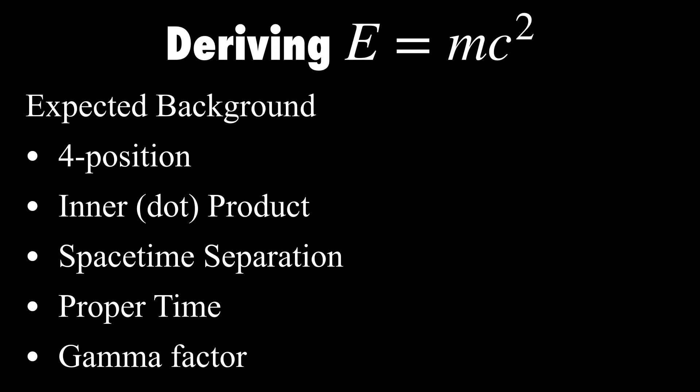Alright, so in this video we're going to be deriving E=mc² using four-vectors and special relativity.